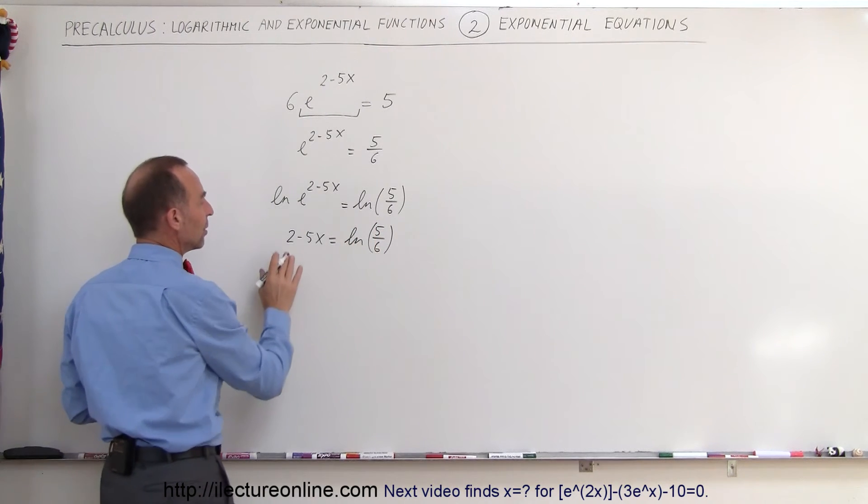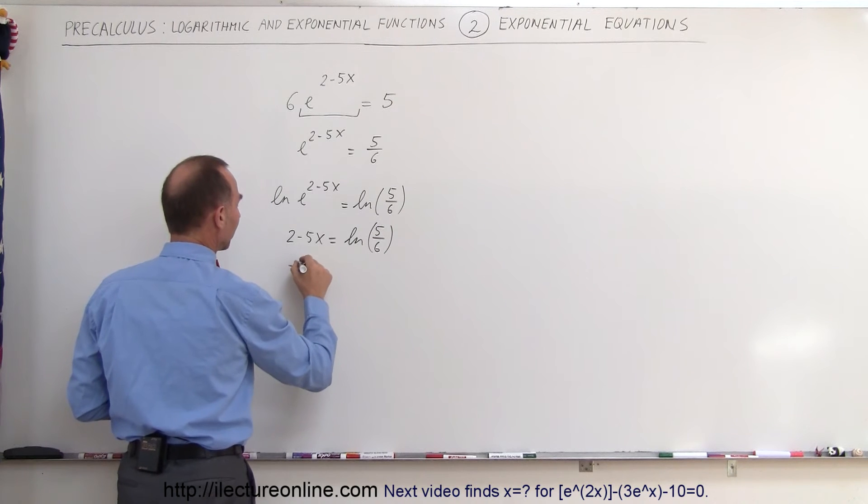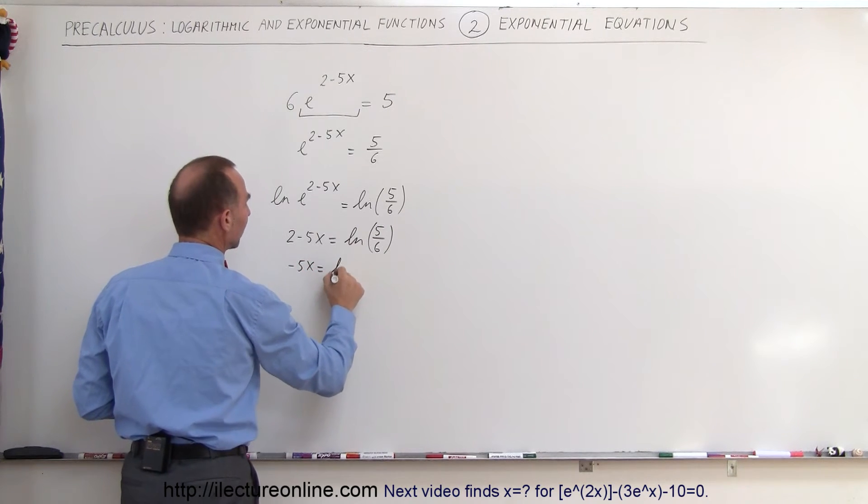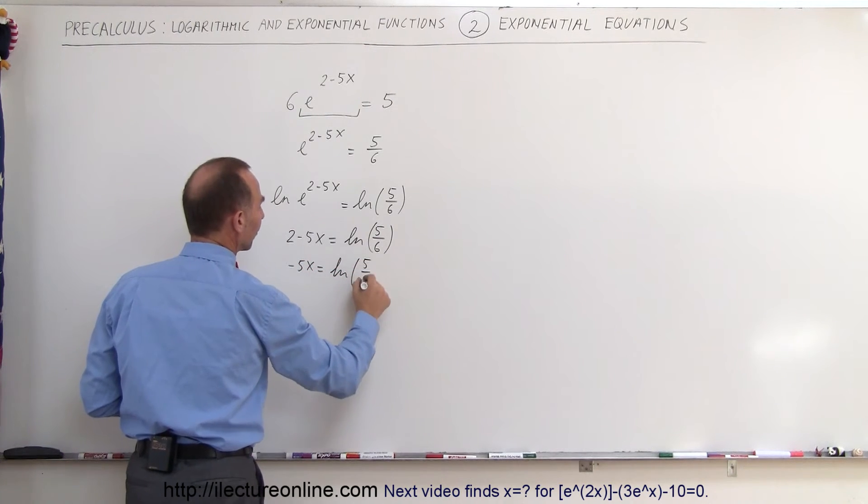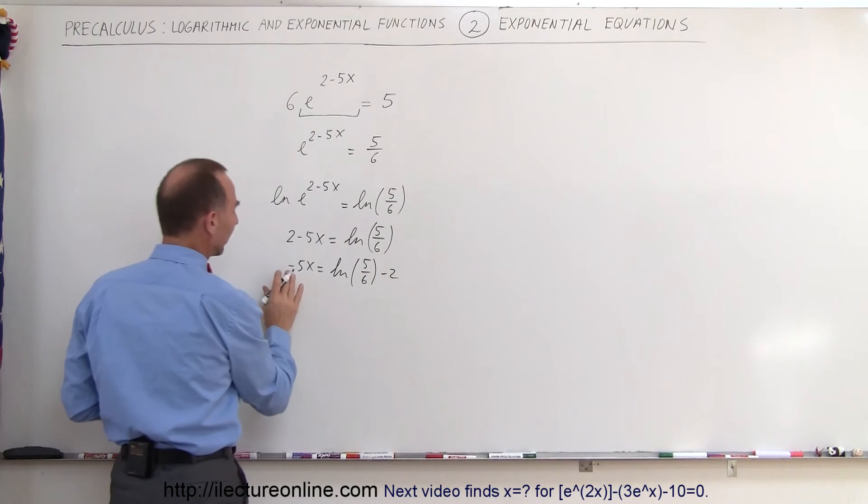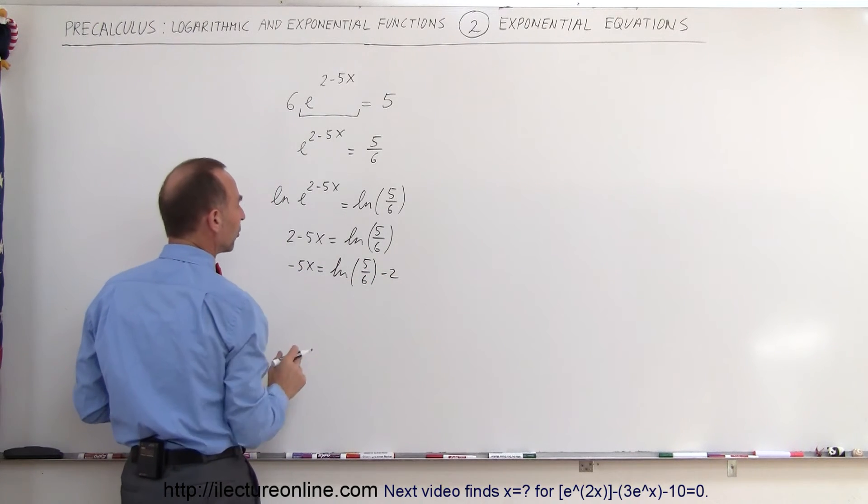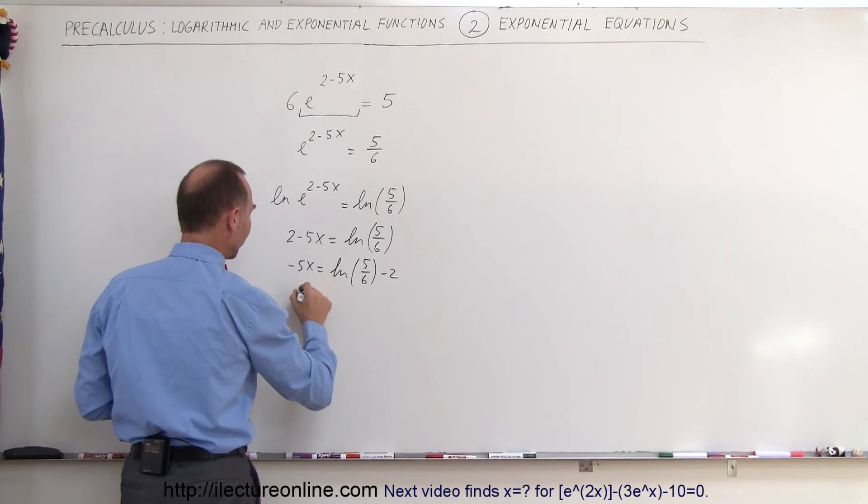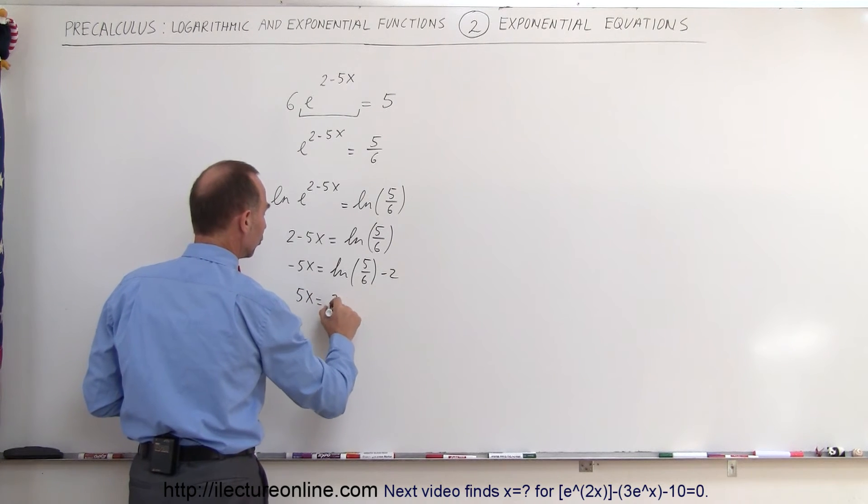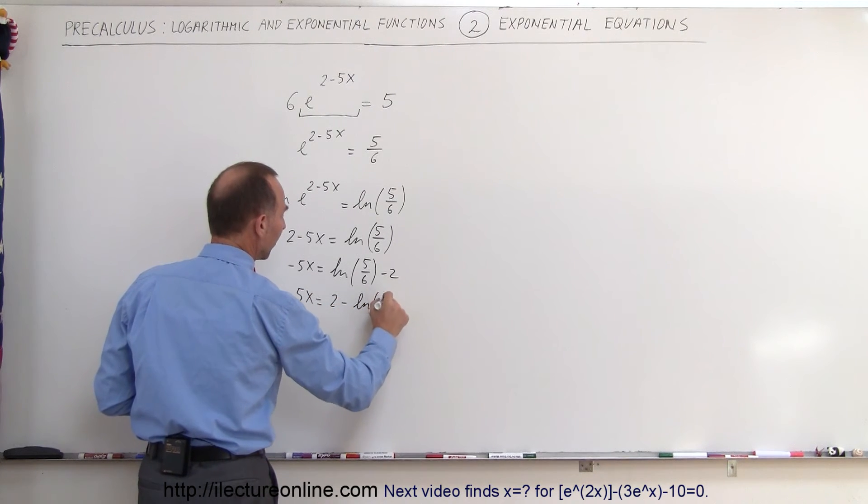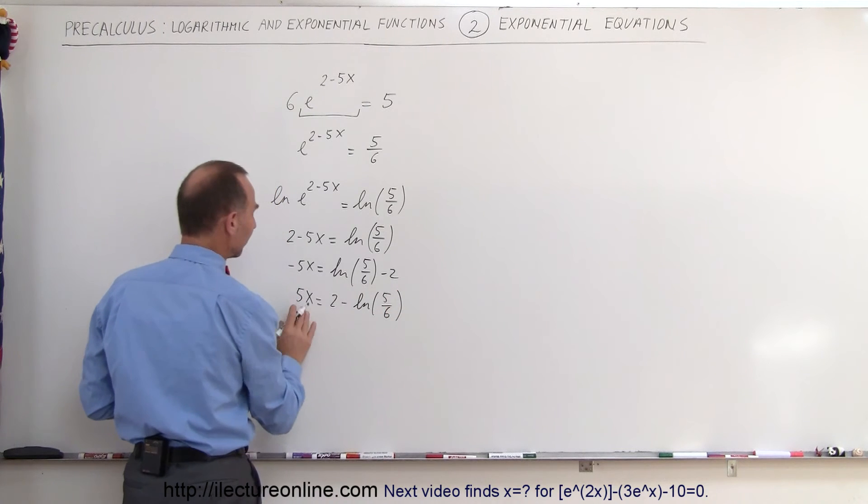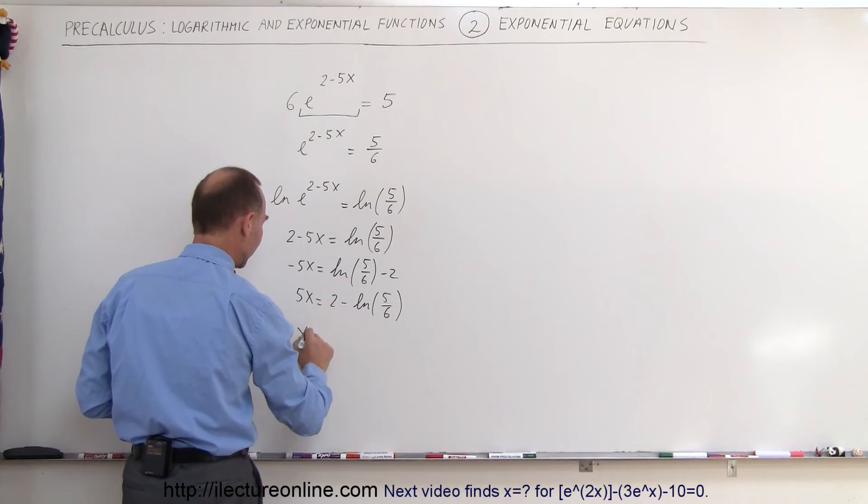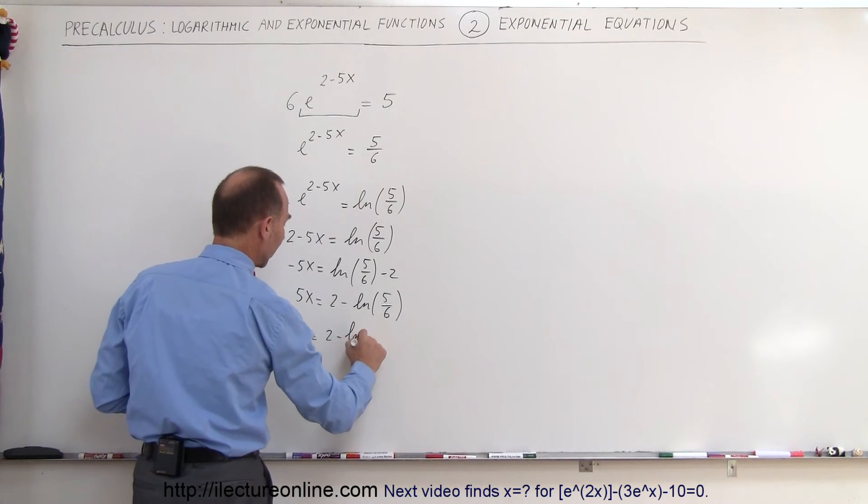Now we solve for x. Subtract 2 from both sides: -5x equals ln(5/6) minus 2. Multiply both sides by -1: 5x equals 2 minus ln(5/6). Divide both sides by 5: x equals (2 - ln(5/6))/5.